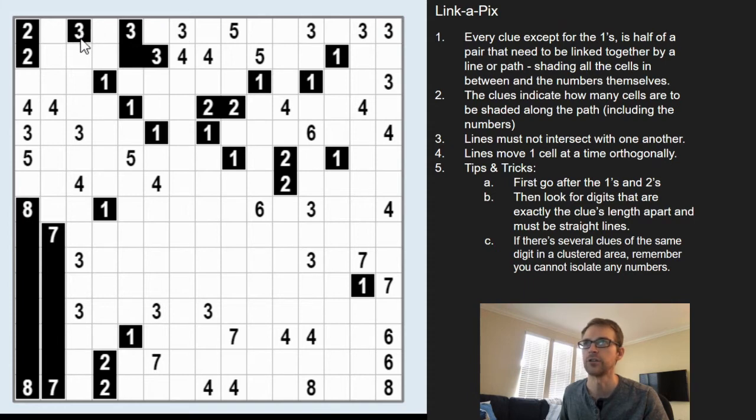You wouldn't be able to say connect this three to that three, because then you've isolated these two. Because how are you gonna connect this one to another three? The three below it is too far away, and this three would not have any other partner to connect with. So it's real easy to see that this three must connect with that three.